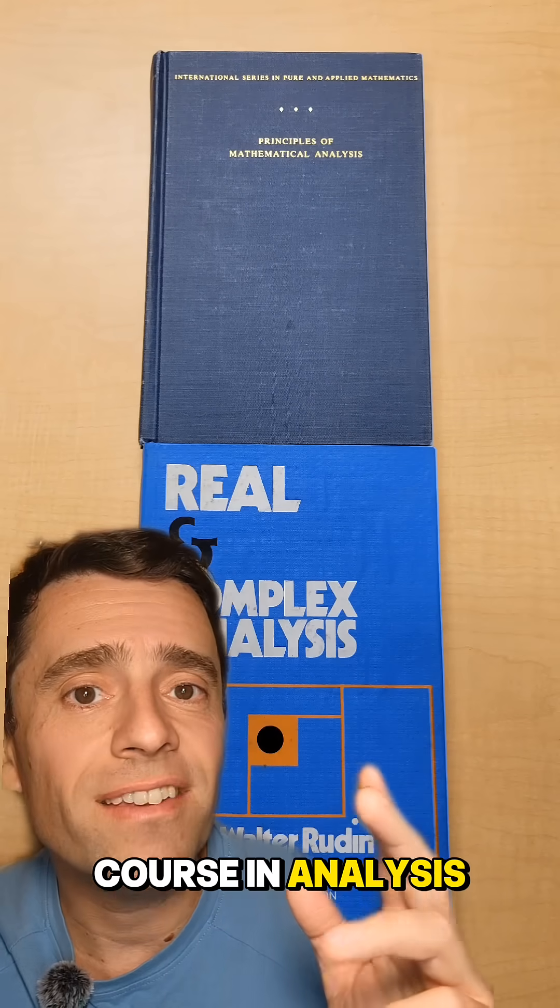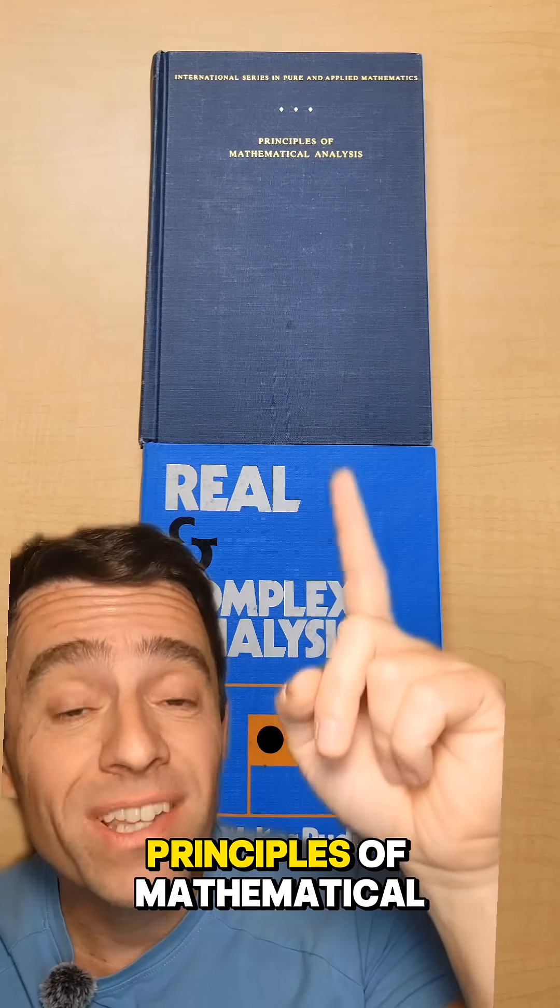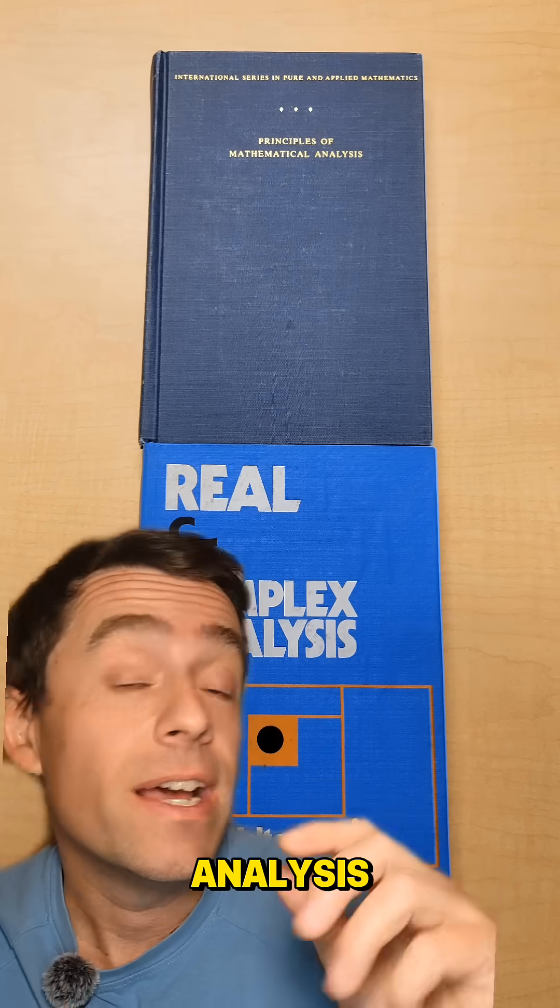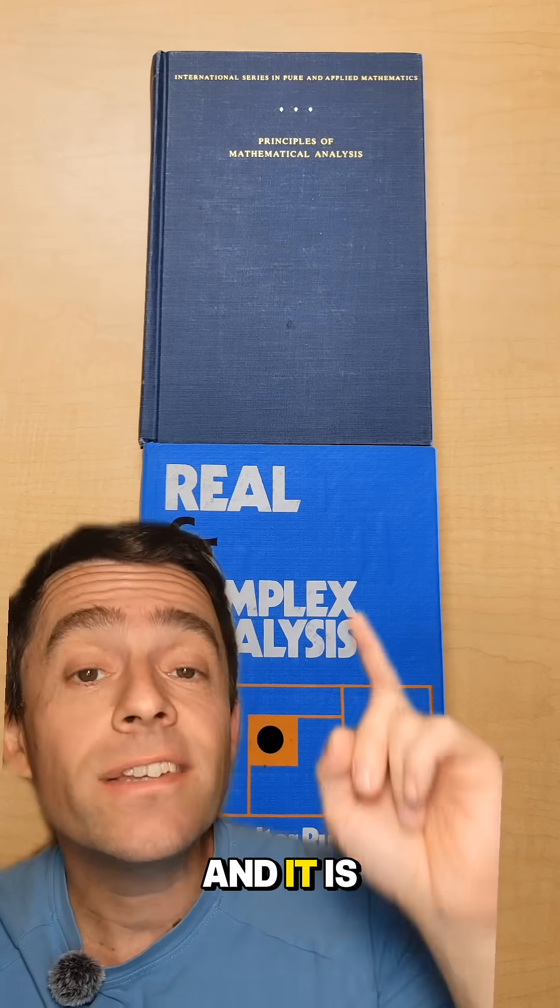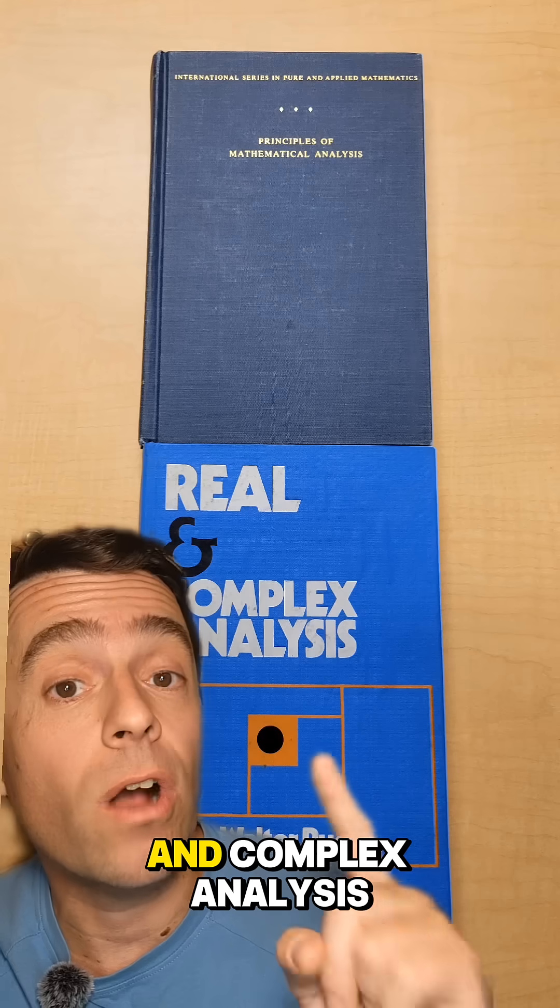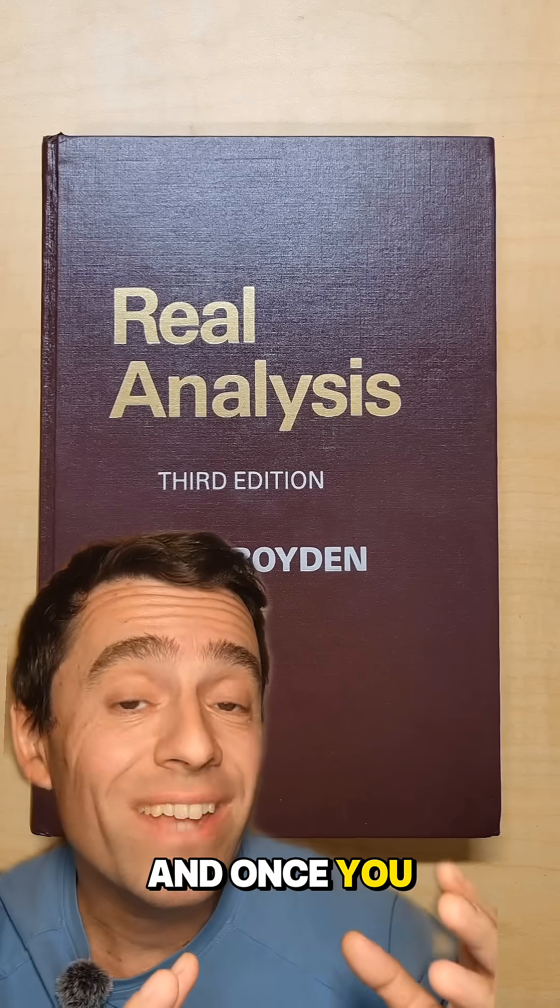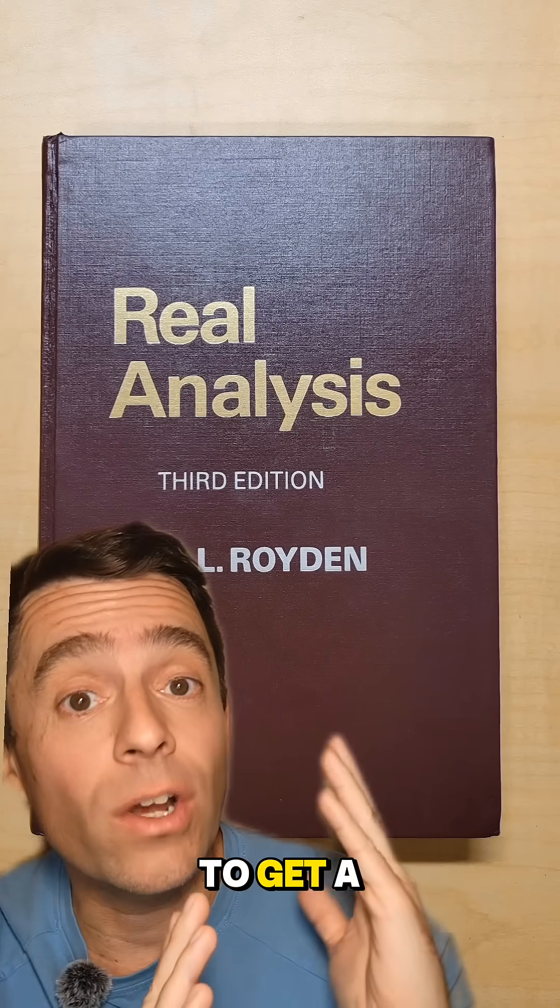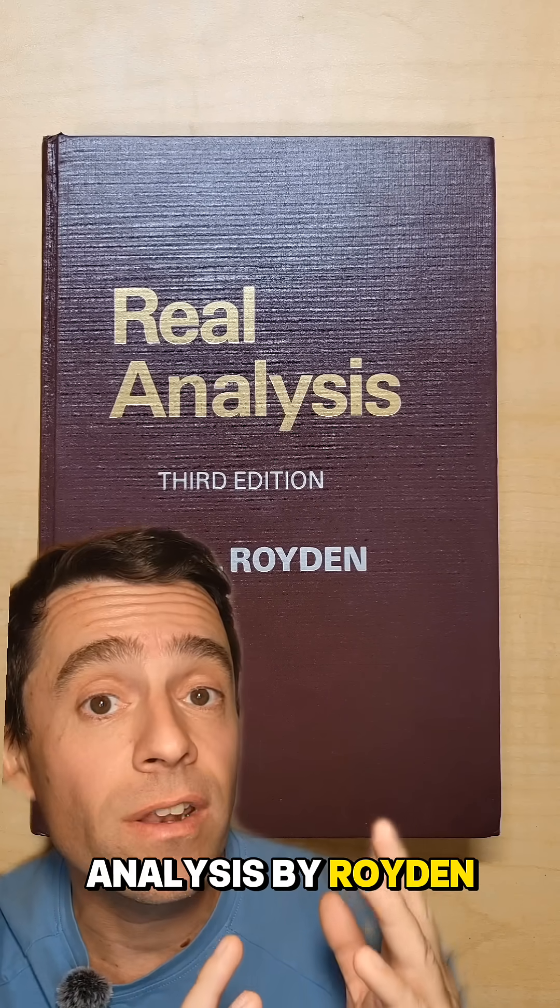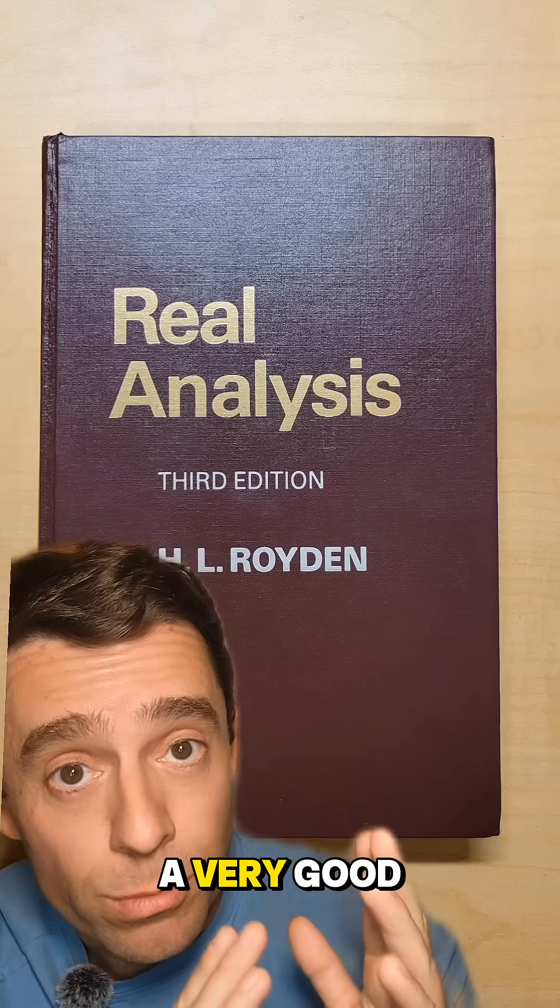In a first course in analysis, everyone should read at least once what we call Baby Rudin, Principles of Mathematical Analysis. It's a great book, and it is actually called Baby Rudin because there is Papa Rudin, which is Real and Complex Analysis, which is also a great source for complex. And once you get to measure theory, you probably want to get a copy of Real Analysis by Rudin, which is a book that kicked my butt, but it is a very good book.